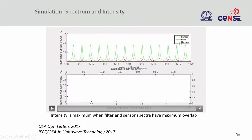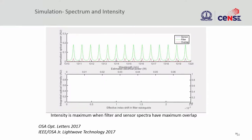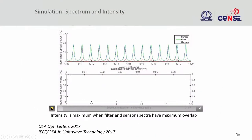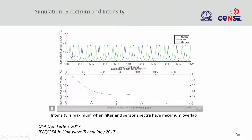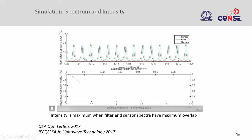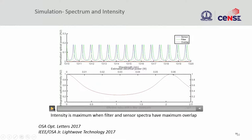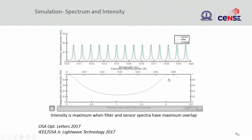This is a simulation of such an architecture — just to understand how it should work. You have the sensor ring and the filter ring. What you see in red is the overlap between them. The bottom plot shows the total light intensity change as a function of effective refractive index. You can see the sensor or filter is moving — when it is moving, you can see the power going down, and once it reaches closer to alignment, the power becomes higher. The red curve shows the output going up and down as a function of refractive index change.